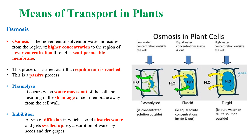Next is osmosis. Osmosis is the movement of water molecules from a region of higher concentration to a region of lower concentration through a semi-permeable membrane until an equilibrium is reached. Osmosis involves plasmolysis and imbibition. Plasmolysis occurs when water moves out of the cell, which results in the shrinkage of the cell membrane.